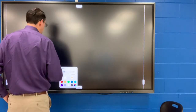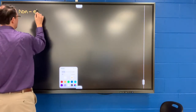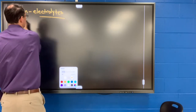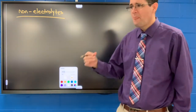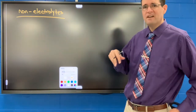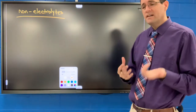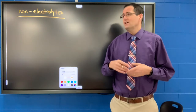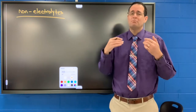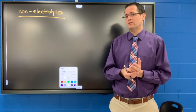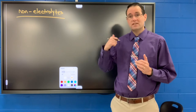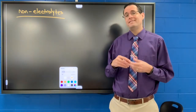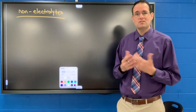Non-electrolytes, on the other hand — as you recall from the demonstration, pure water was a non-electrolyte; I put my light bulb in there and it didn't turn on at all. Non-electrolytes are solutions that contain water and a molecular compound. Molecular compounds are composed of only non-metals in their chemical formula. These substances are not going to conduct electricity.